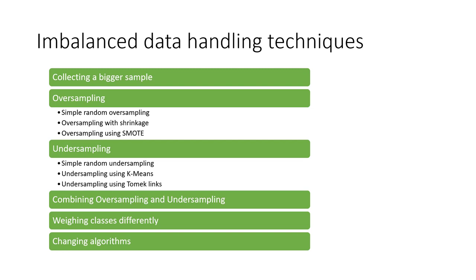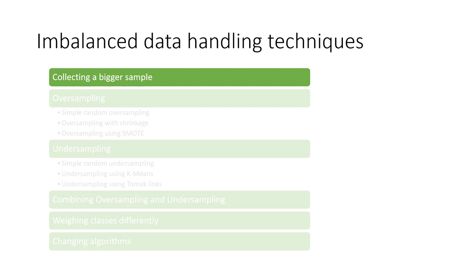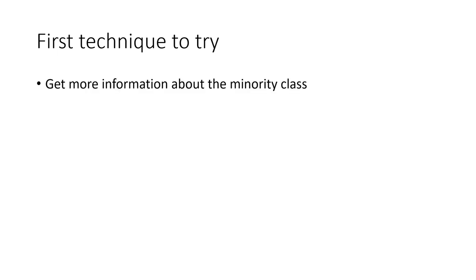Let's start from the first technique: collecting a bigger sample when possible. You might think this is silly, but you should be thinking about this before the other techniques. Expanding the sample helps us get more information about the minority class, though this technique is not always feasible. For our abalone dataset, there's no way to collect more measurements. But if you're working at a credit card company, it's usually easy to expand from one month of transactional data to two or three months, potentially finding more fraudulent transactions.